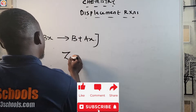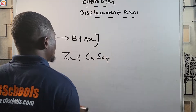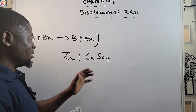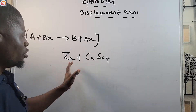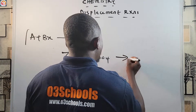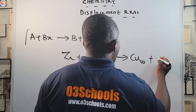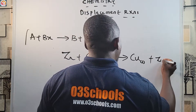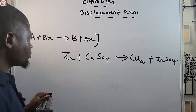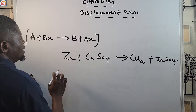For example: Zn + CuSO₄. Because zinc is more electropositive than copper, zinc can knock copper off from this compound. The products are: Cu (in the free state) + ZnSO₄.